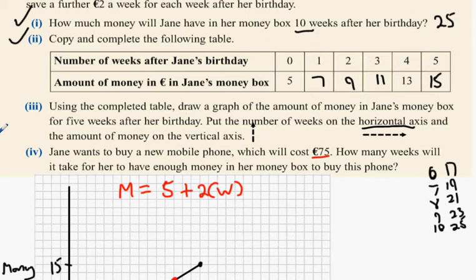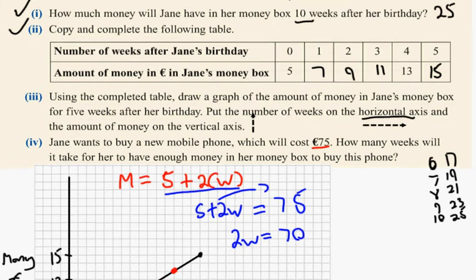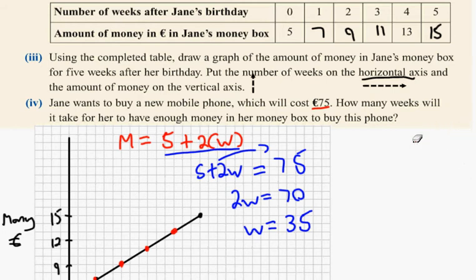So: 5 plus 2w equals 75. Bringing the 5 over to the other side, 2w equals 70, and then w equals 35 — 35 weeks. Now another way of thinking of it is like this — some of you might want to think of it a different way.